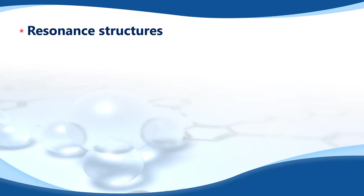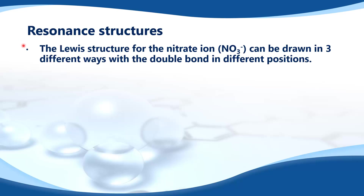Next we look at resonance structures. The Lewis structure for the nitrate ion, which is NO3 negative, can be drawn in three different ways with a double bond in different positions.